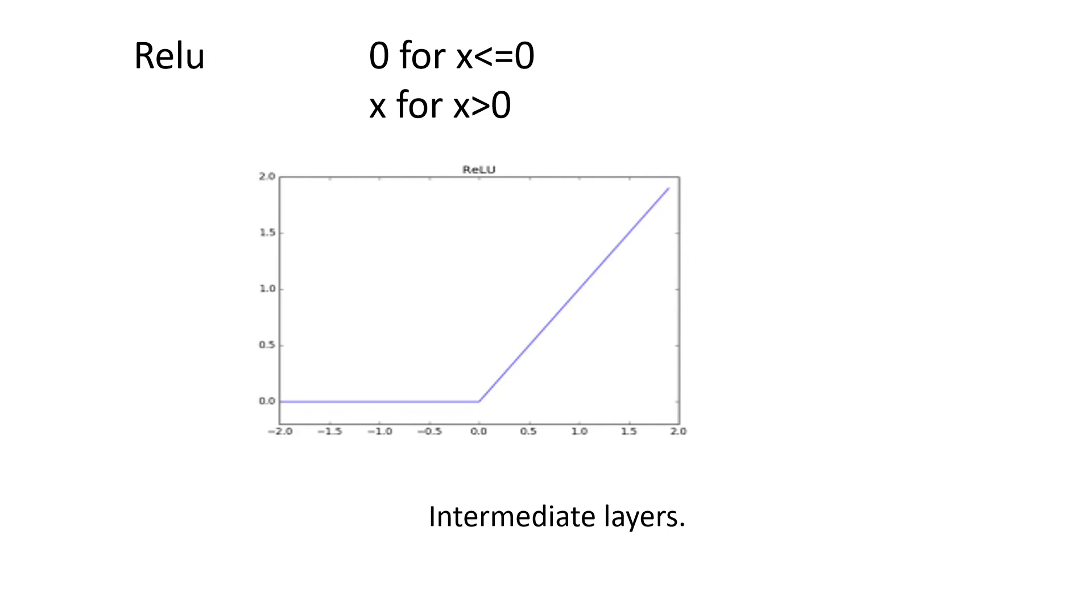And it's mostly used when you are not very sure about the activation function. So if I am not sure if I am implementing a neural network and I don't know which activation should I use, then I mostly go for ReLU because it's a safe one. And mostly I use it in the intermediate layers.